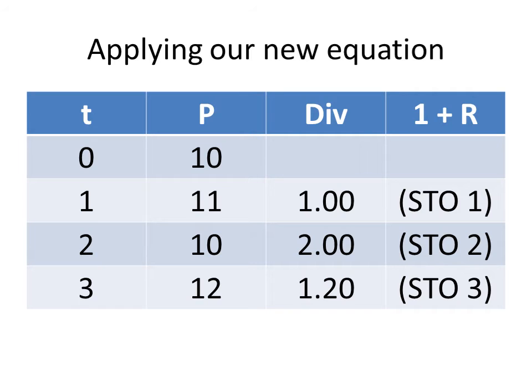We take 10, the price at time 2, plus 2, the dividend at time 2. So that's a total of 12. And now we are going to divide by the price at time 1, which is 11.